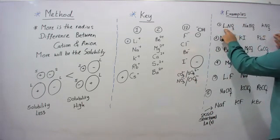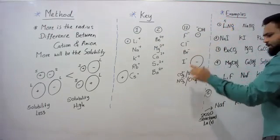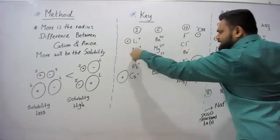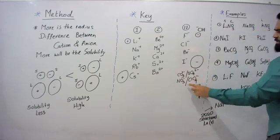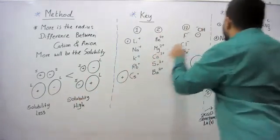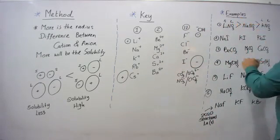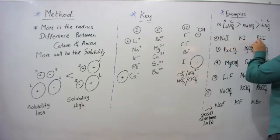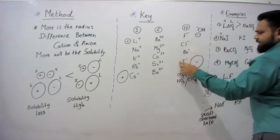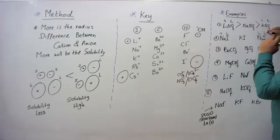Now for examples. Lithium nitrate, sodium nitrate, potassium nitrate: lithium is a small cation, nitrate is a large anion — so small/large. Potassium is larger than lithium — large/large. Since small/large has the greater radius difference, LiNO₃ is more soluble. For sodium iodide, potassium iodide, rubidium iodide: sodium is the smallest — small/large; rubidium is the largest — large/large. Therefore NaI is more soluble.